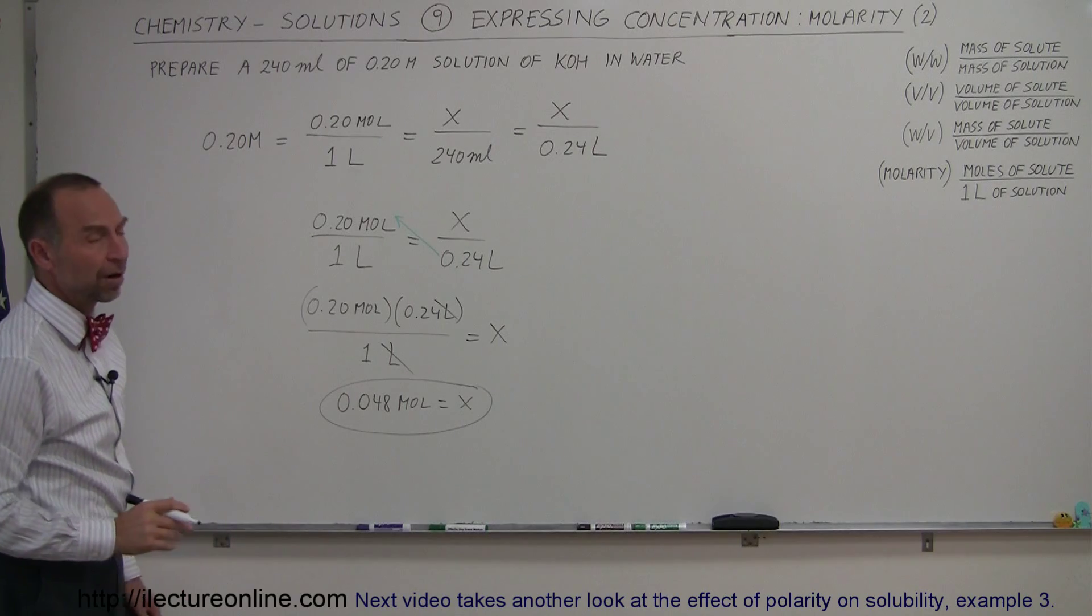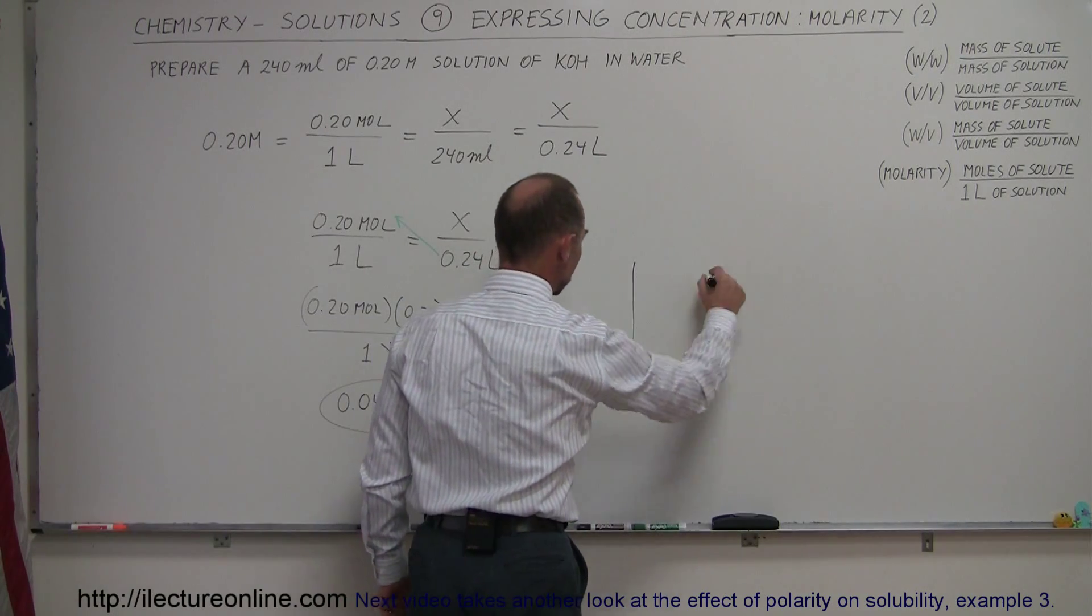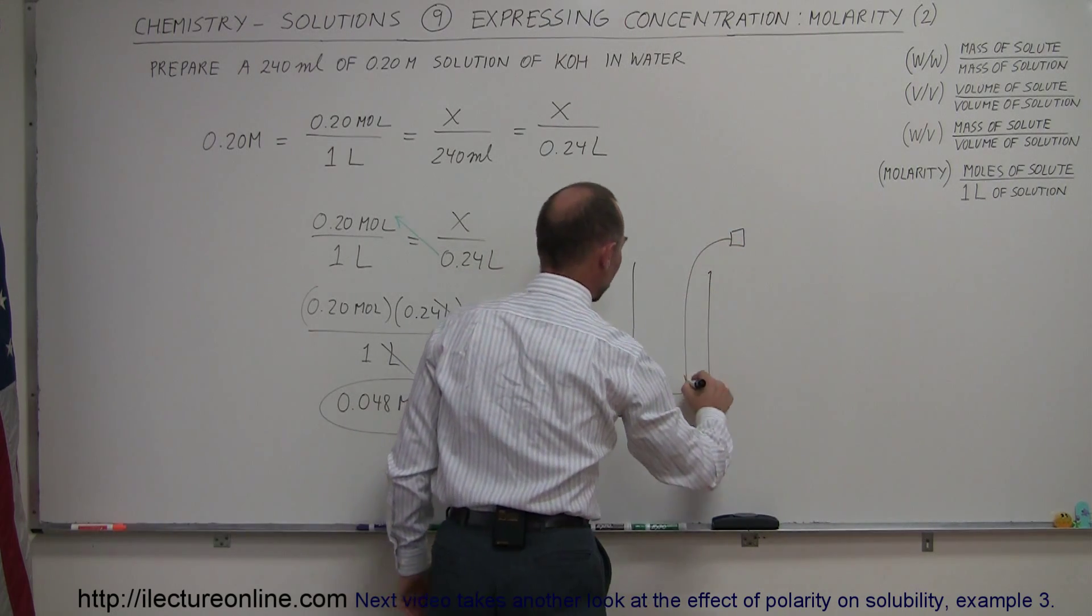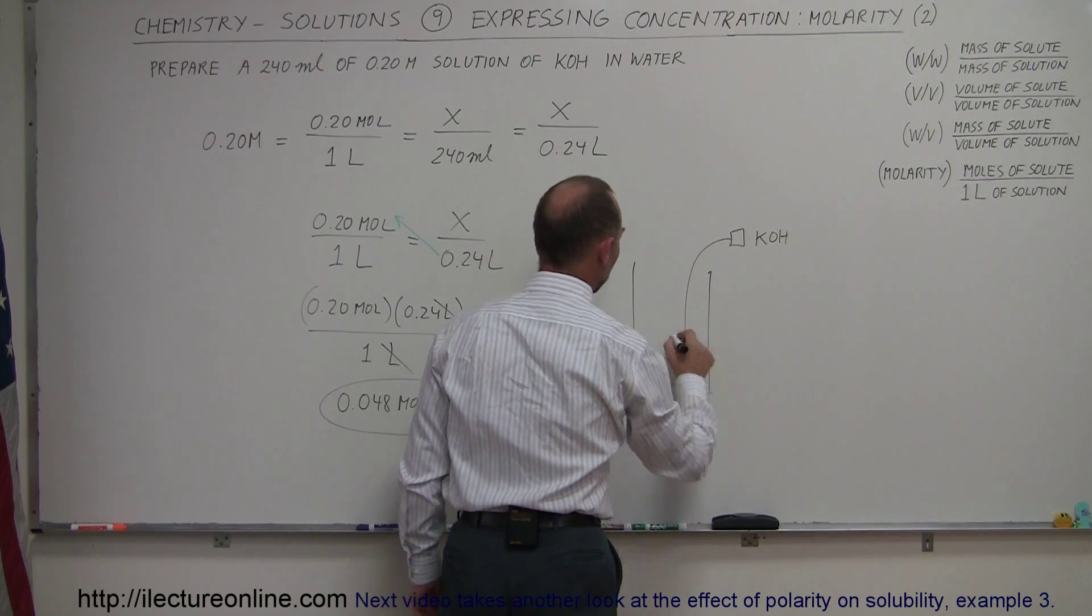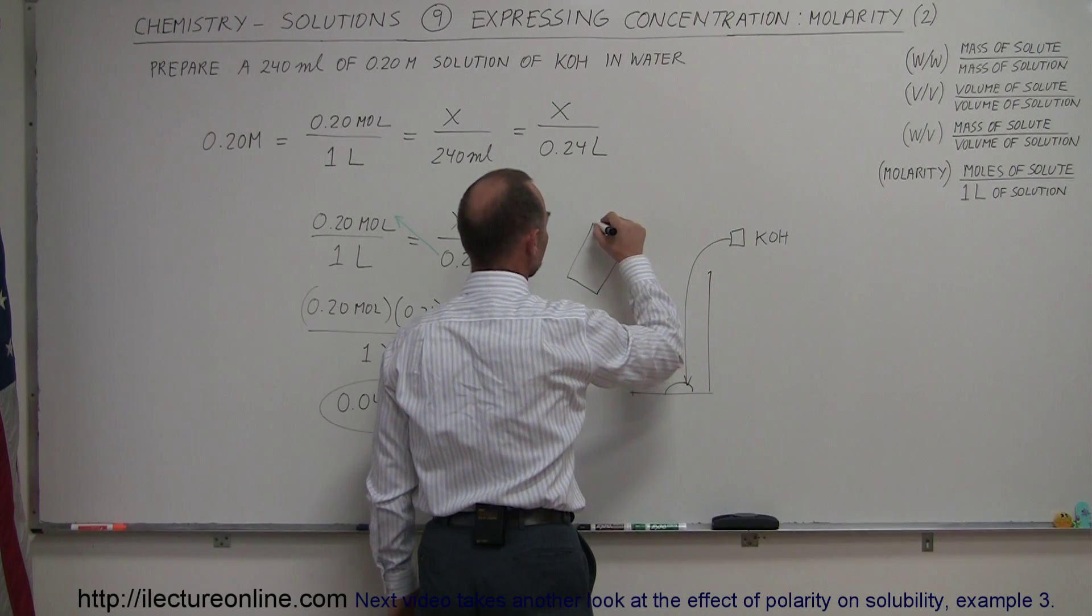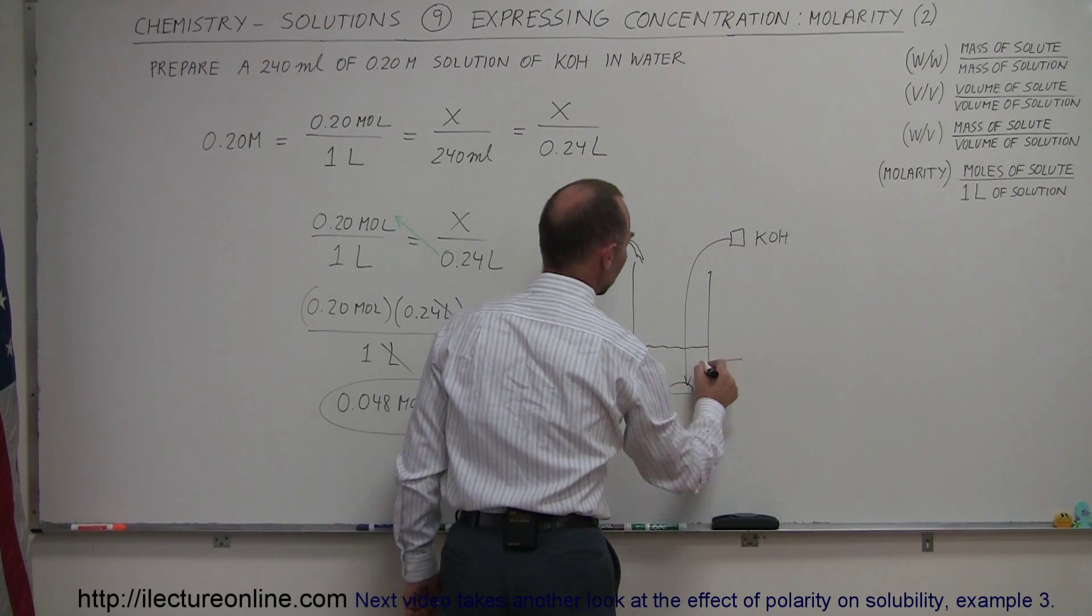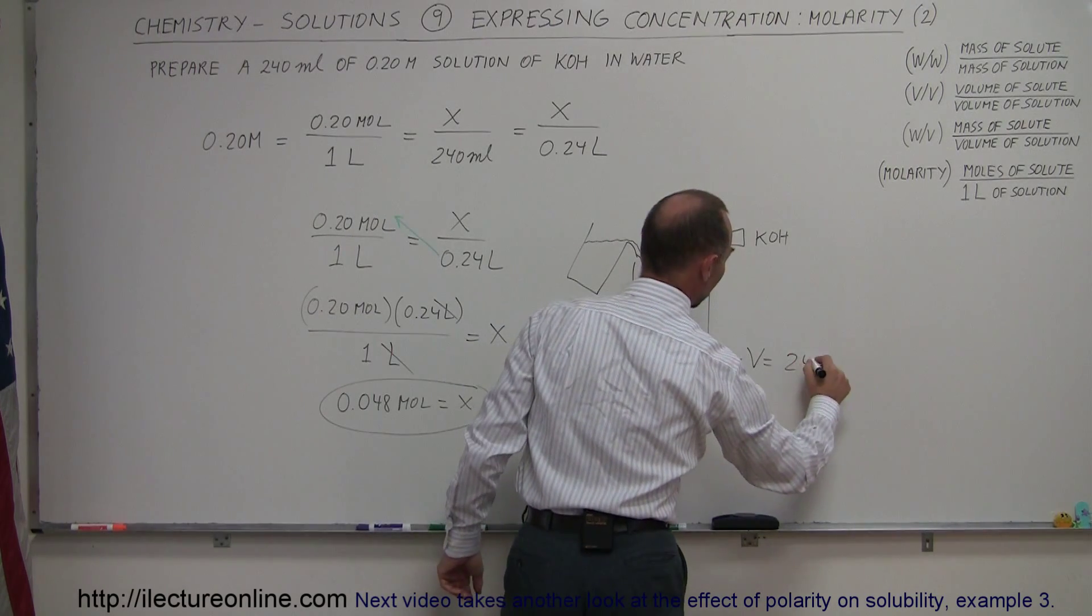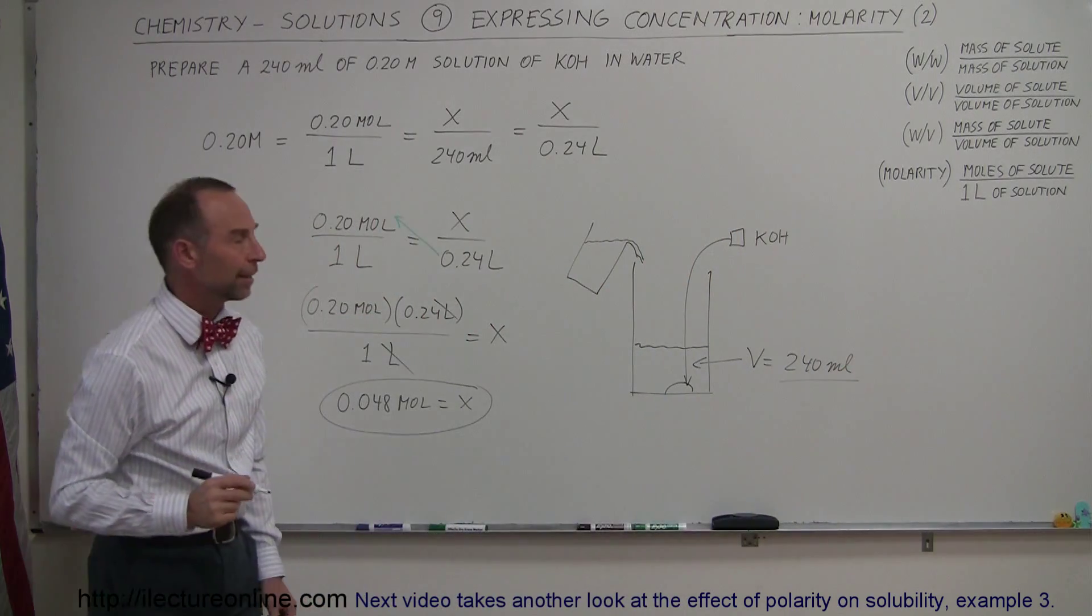So then the next step, what you would do, you would go ahead and take a container. You then put in the potassium hydroxide, put it into the beaker, and then you add enough water to fill it up until the volume equals, and how much do we need? 240 milliliters. And that's how you would make that solution.